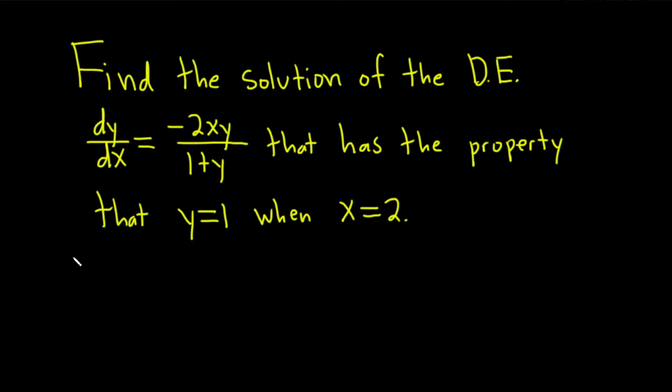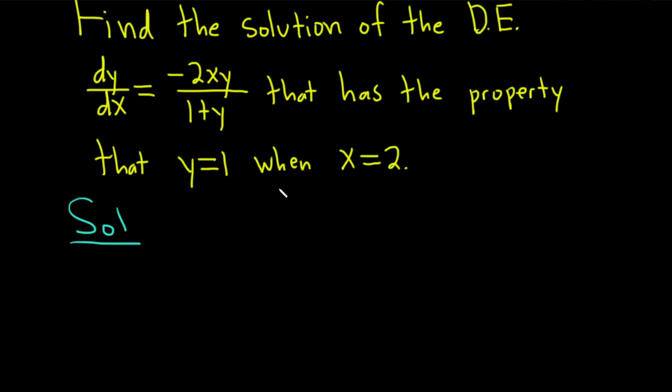Okay, let's go ahead and try to work through this solution. So I'm going to start by writing down the differential equation again down here. This is dy/dx equals negative 2xy over 1 plus y.